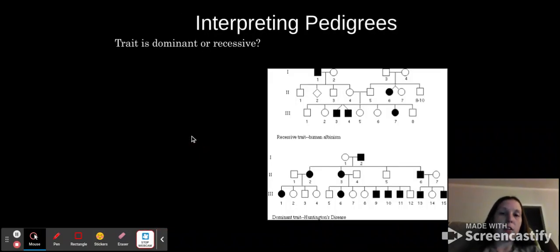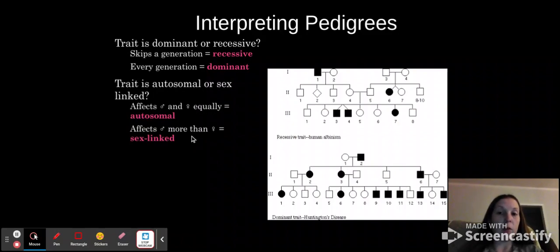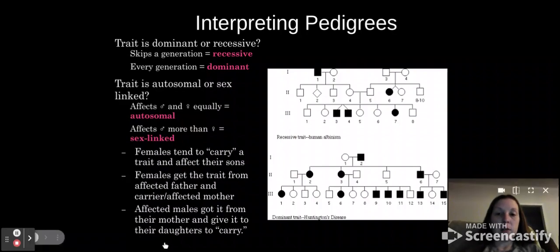So interpreting these, you can determine if a trait is dominant or recessive. If it skips a generation, then it would obviously be recessive. If you see it present in every generation, it is dominant. Is it autosomal or sex-linked? If it affects males and females equally, then it's autosomal. If it affects males more, then it's sex-linked. Females tend to carry the trait but are not affected by it. And they affect their sons with it. And then females get the trait from affected father and carrier or affected mother. Affected males got it from their mother and give it to their daughters to carry.